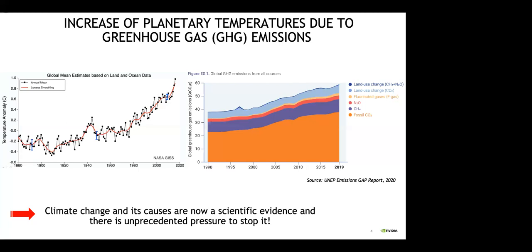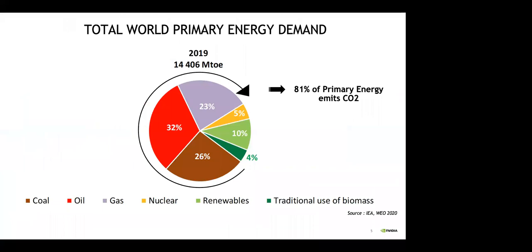The effects of climate change are devastating and irreversible, as CO2 remains in the atmosphere for several centuries, and there is unprecedented effort to stop it. The majority of greenhouse gases are due to energy consumption: 81% of primary energy emits CO2, with 26% from coal, 32% from oil, and 23% from gas. Therefore, the major challenge of energy transition is to reduce the use of fossil fuels.